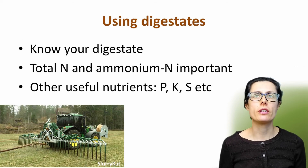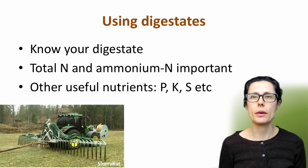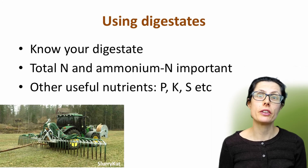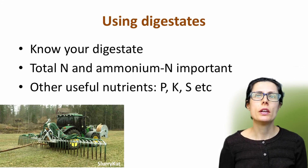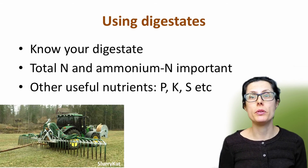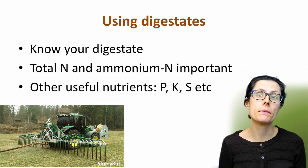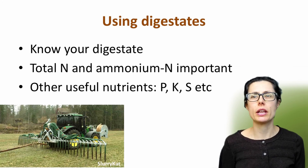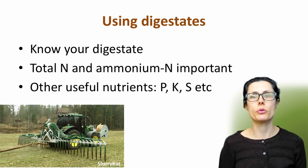Using digestate is similar to using any other bulky organic material. It's important to understand its chemical and physical properties and to choose appropriate storage and application techniques to minimise nutrient losses. Knowing how much nitrogen is readily available as ammonium, plus the other nutrients — especially phosphorus, potassium and sulphur — can help with nutrient planning. When planning to use digestates, it's important to calculate the fertiliser replacement value, or ask a FACTS-qualified advisor to do this for you.